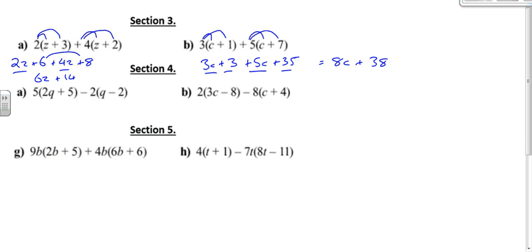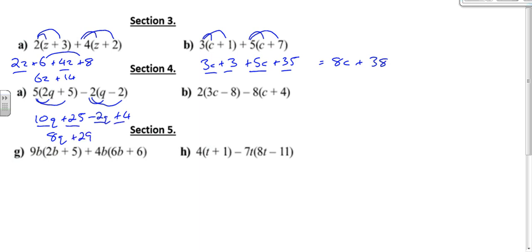So 5 times 2q is going to be 10q. 5 times 5 is going to be 25. Minus 2 times q is going to be minus 2q. And minus 2 times minus 2 is going to be plus 4, because minus times minus is a plus. If we simplify that, 10q take away 2q is going to be 8q. 25 plus 4 is going to be plus 29.